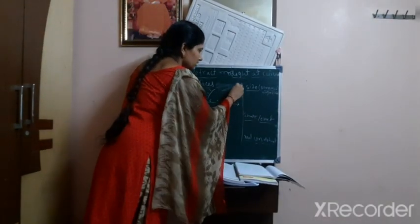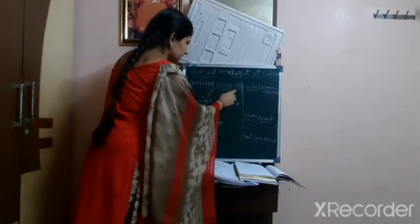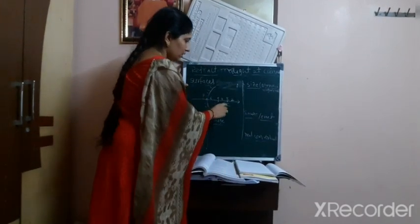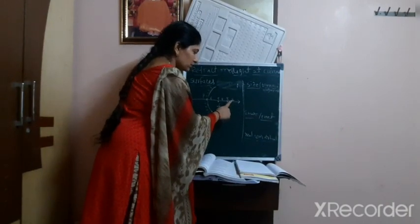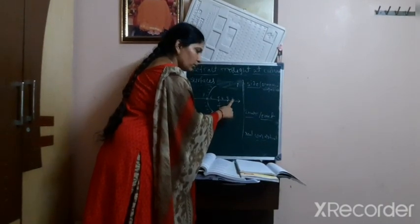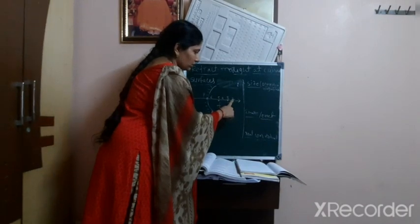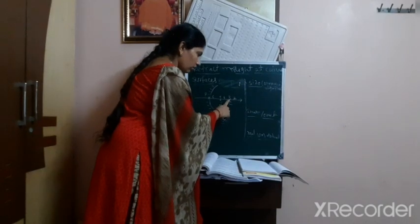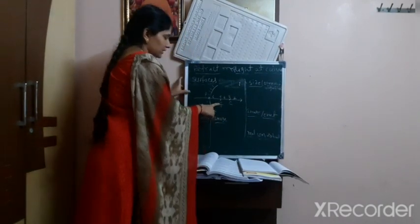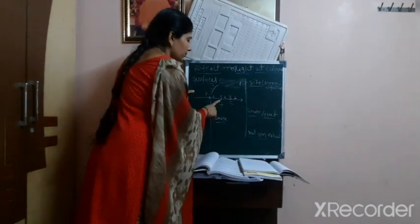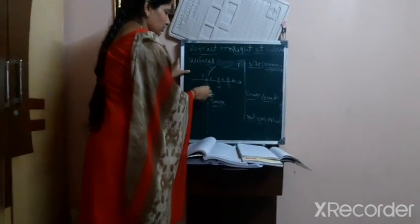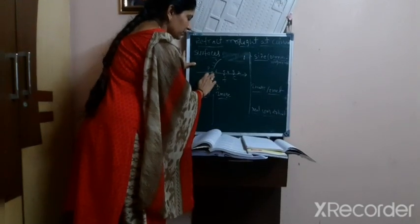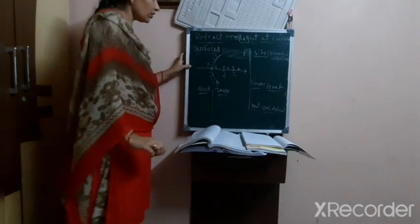The six positions are: first, the object placed at infinity; second, the object placed beyond C; third, the object placed on C; fourth, the object placed between F and C; fifth, the object placed on F; and sixth, the object placed between P and F.